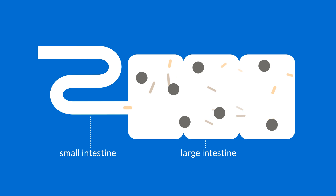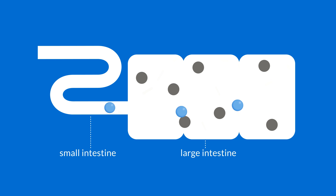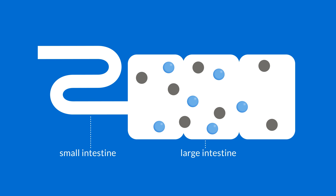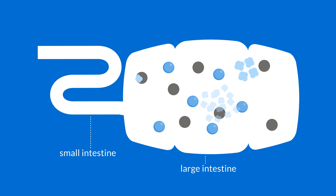As this illustration shows, FODMAPs are poorly absorbed in the small intestine and arrive into the colon, leading to increased water in the gut. In addition, there's a rapid production of gas, both of which can lead to pain, bloating and discomfort.